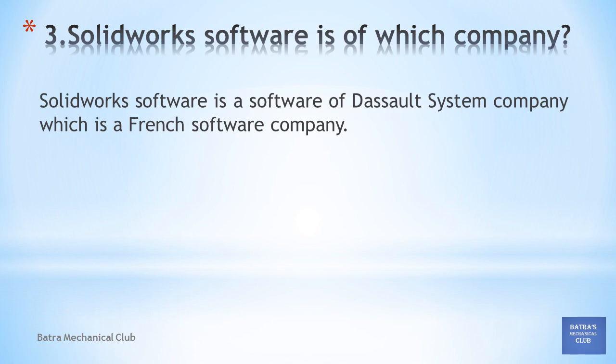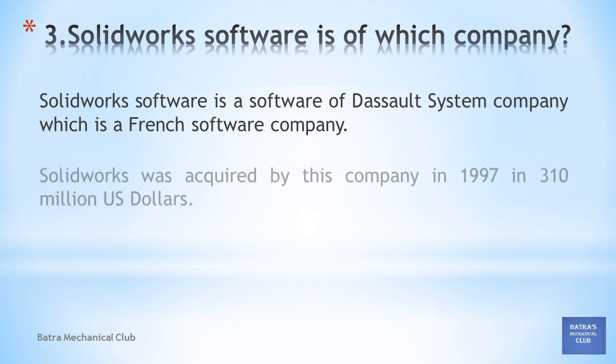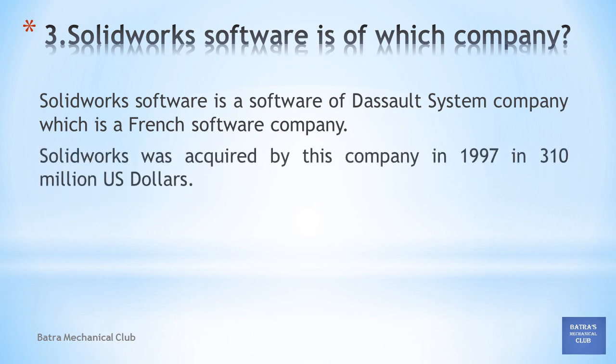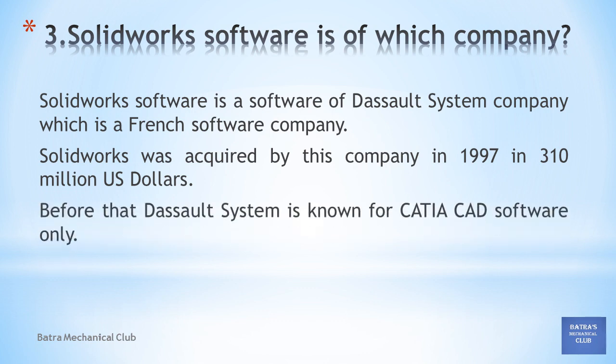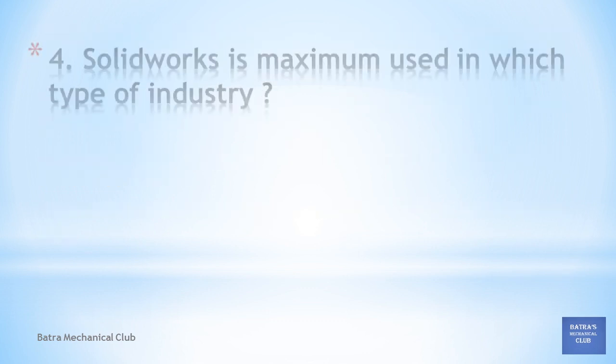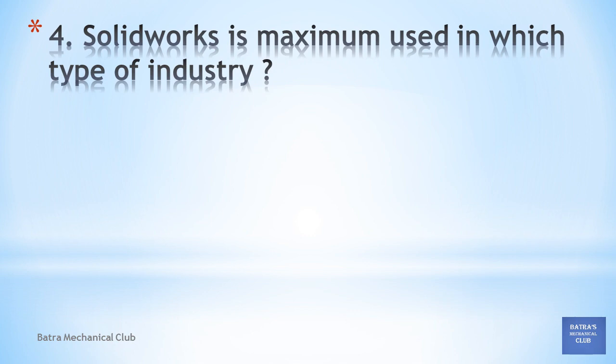Next question: SolidWorks software is from which company? SolidWorks is a product of Dassault Systèmes, a French software company. It was acquired by Dassault Systèmes in 1997 for 310 million US dollars. Before that, Dassault Systèmes was known mainly for CATIA CAD software.